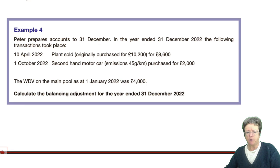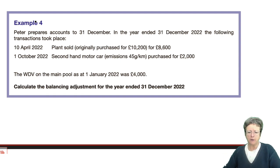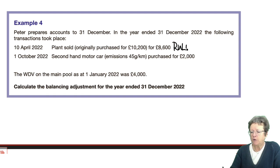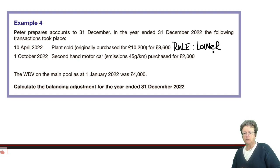Example four gives us information on how this looks. Peter prepares accounts to the 31st of December. In the year to December 2022, the following transactions took place: in April 2022, plant was sold — originally bought for £10,200 and sold for £8,600. Remember the rule: it's the lower of those two. A second-hand car was bought with emissions of 45 grams in 2022.